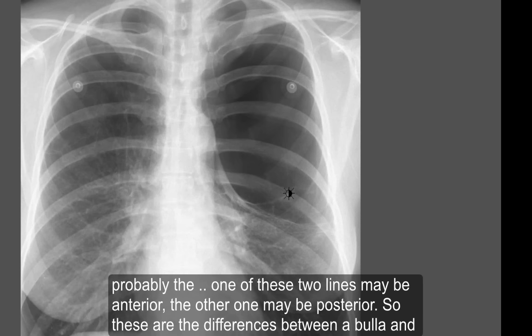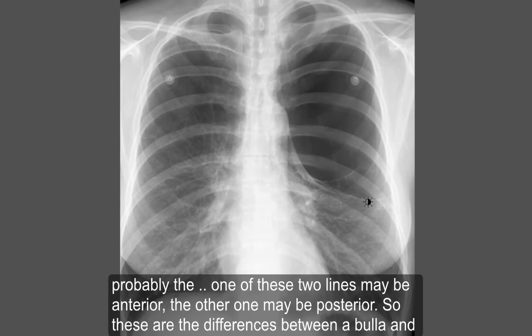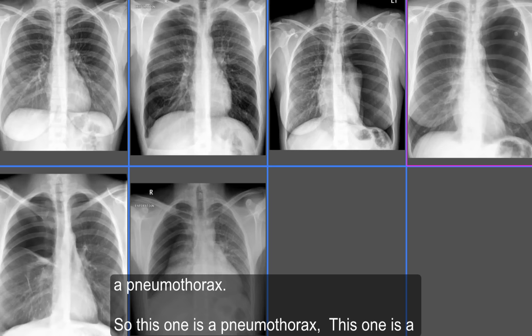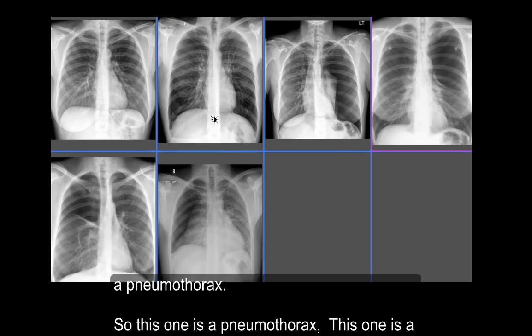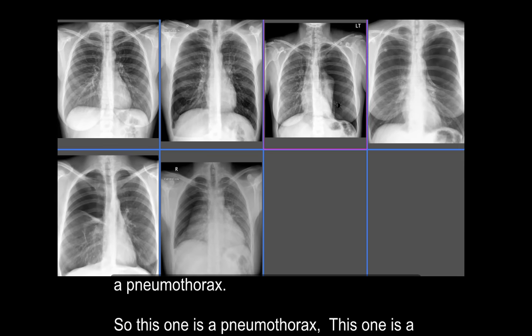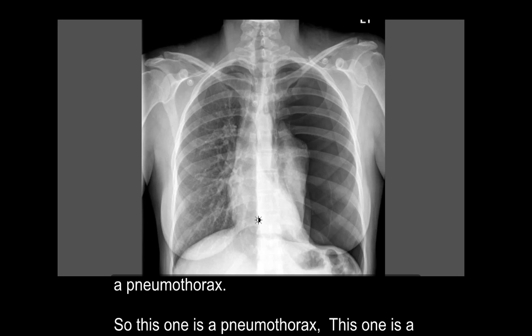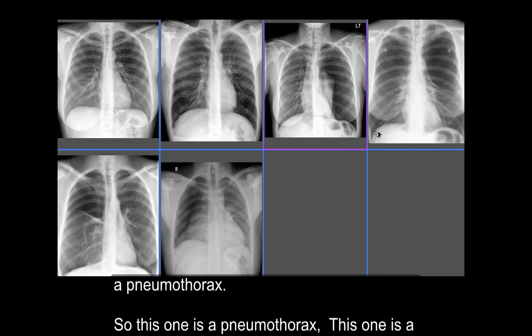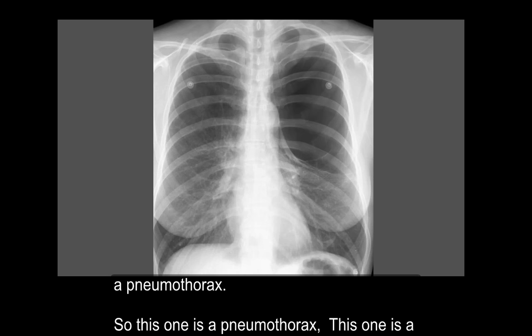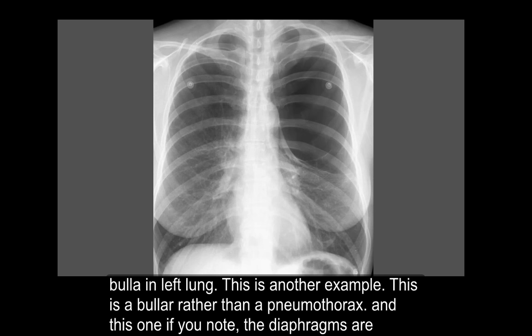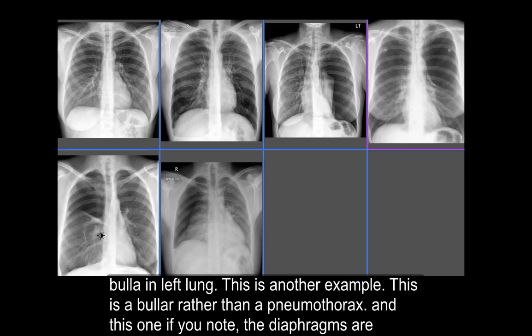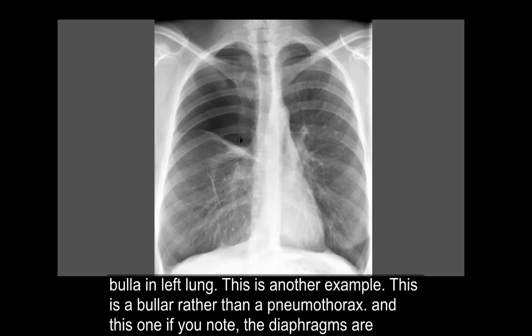One of these two lines may be anterior and the other may be posterior. These are the key differences between a bulla and a pneumothorax. So this one is a pneumothorax, and this one is a bulla in the left lung. Here is another example.